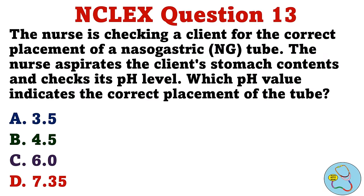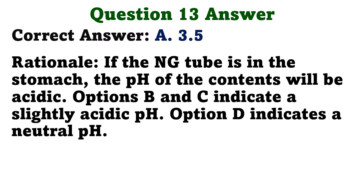The nurse is checking a client for the correct placement of a nasogastric tube. The nurse aspirates the client's stomach contents and checks its pH level. Which pH value indicates the correct placement of the tube? A. 3.5. B. 4.5. C. 6.0. D. 7.35. The correct answer is A: 3.5. If the NG tube is in the stomach, the pH of the contents will be acidic. Options B and C indicate a slightly acidic pH. Option D indicates a neutral pH.